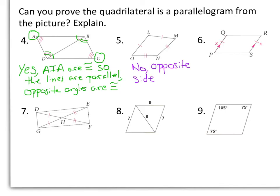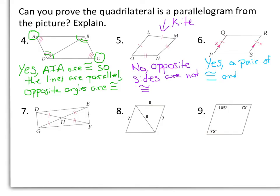Actually in number 5, we have a kite. This figure is a kite, and remember, kites are not parallelograms. For number 6, we're told we have a pair of opposite sides that are congruent and they are parallel. So number 6 is yes, because we have a pair of congruent and parallel opposite sides.